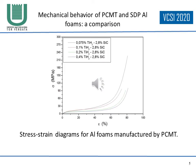In this slide, stress-strain diagrams for aluminum foams manufactured by PCMT are reported. The higher the titanium hydride content, the lower the plateau stress of the curve.